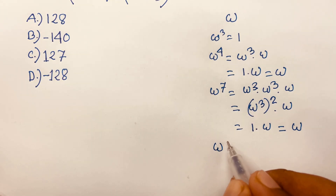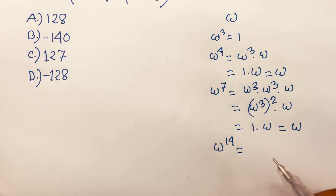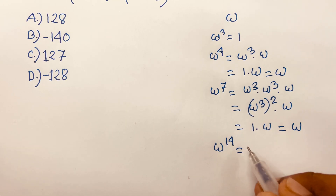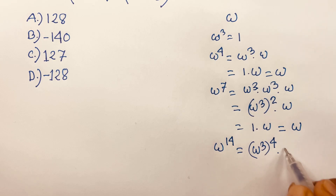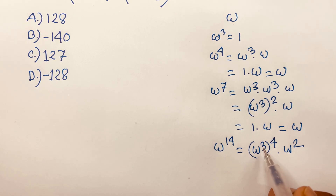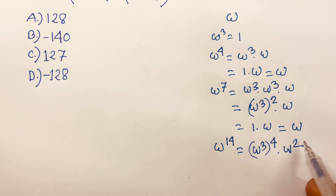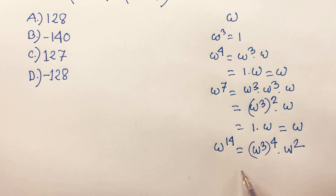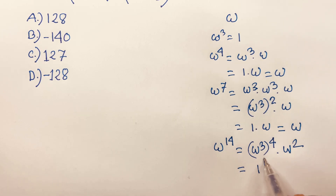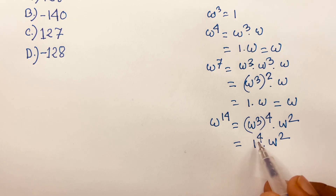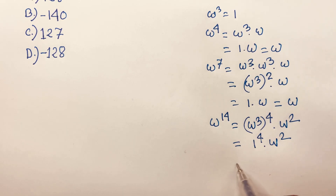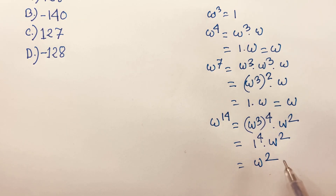Now, omega power 14 is equal to what? Omega power 14 will be (ω³)⁴ times omega squared. Since 3 times 4 = 12, and 12 + 2 = 14. Then 1 to the power 4 times omega squared equals 1 times omega squared, which equals omega squared.